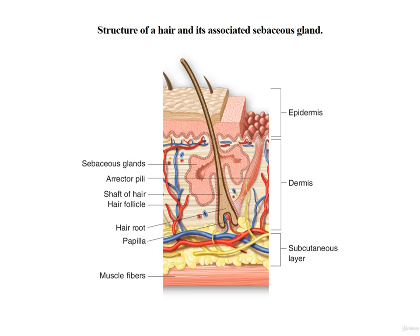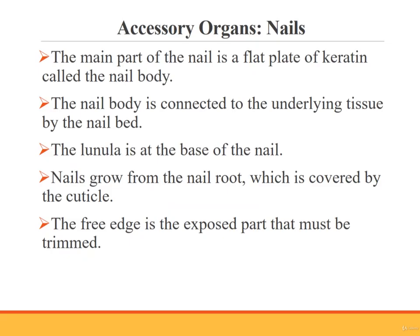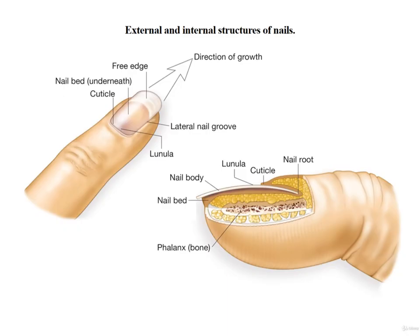This figure illustrates the structure of a hair and its associated sebaceous gland. Sebaceous glands release oil directly into the hair follicle. Nails are another type of accessory organ. The main part of the nail is a flat plate of keratin called the nail body, which covers the ends of the digits. The nail body is connected to the underlying tissue by the nail bed. At the base of the nail, there's a white half-moon area known as the lunula. Nails grow longer from the nail root, which is covered by a soft tissue called the cuticle. The free edge is the exposed edge trimmed when nails grow too long. This figure shows the external and internal structures of the nail.